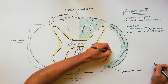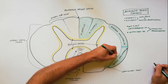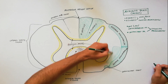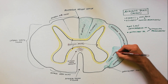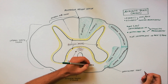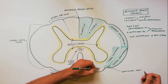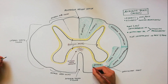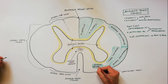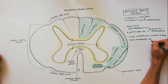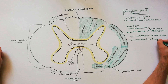Medial to the anterior spinal cerebellar tract, we have the lateral spinothalamic tract, which carries pain and thermal sensations. Just anterior to the ventral gray horn, we have the anterior spinothalamic tract, which carries crude touch sensations.